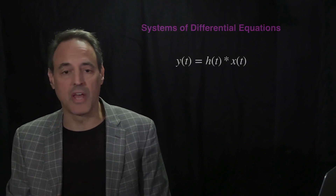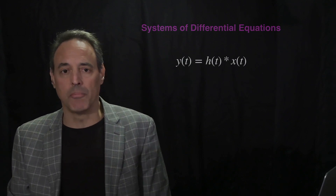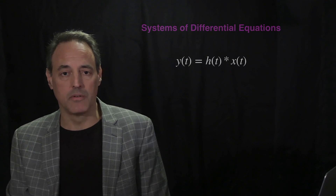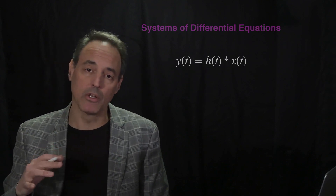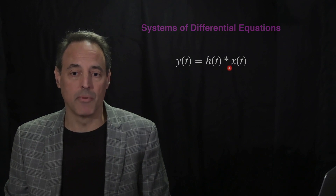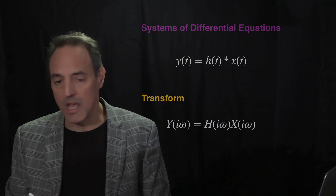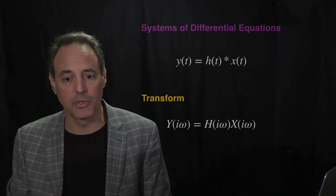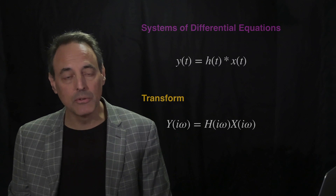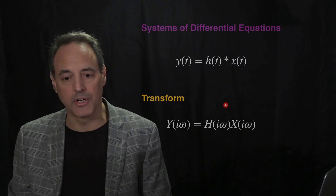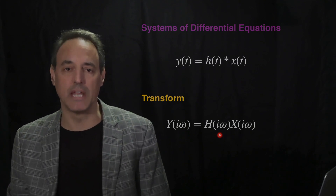Let's go back to the output-input formula through the impulse response. We're still interested in computing an output from an input and understanding the impulse response of the system. From the last lecture, we can solve this easily by Fourier transformation: convolution becomes multiplication of the Fourier transform of X and the Fourier transform of H.